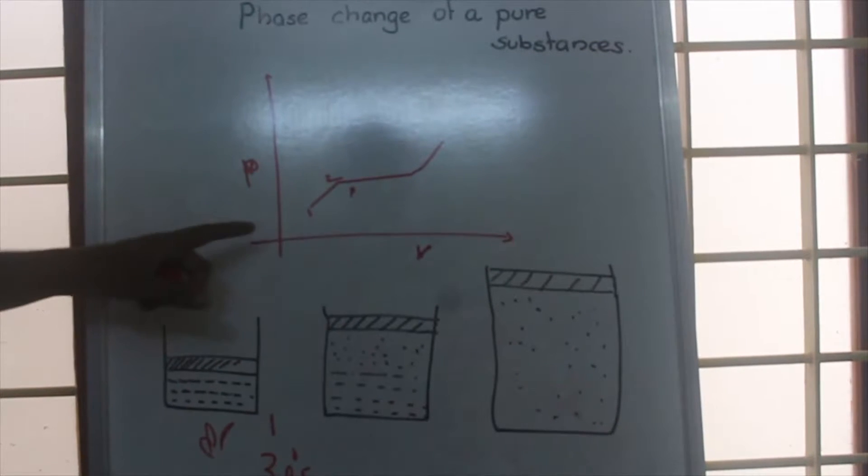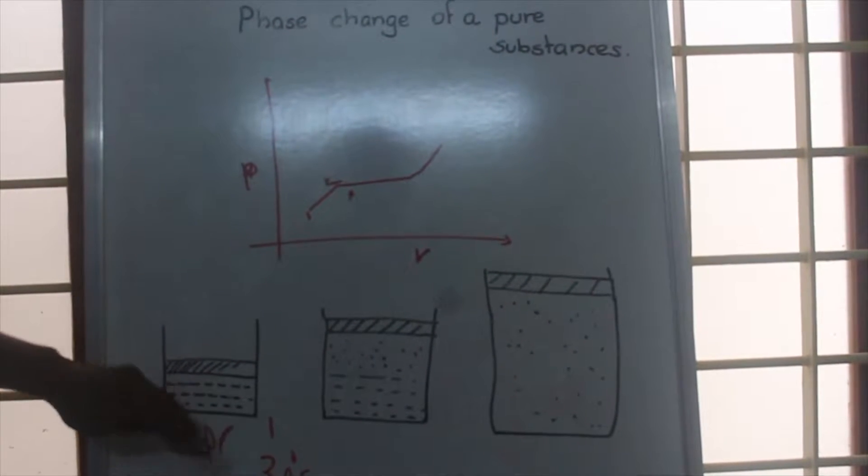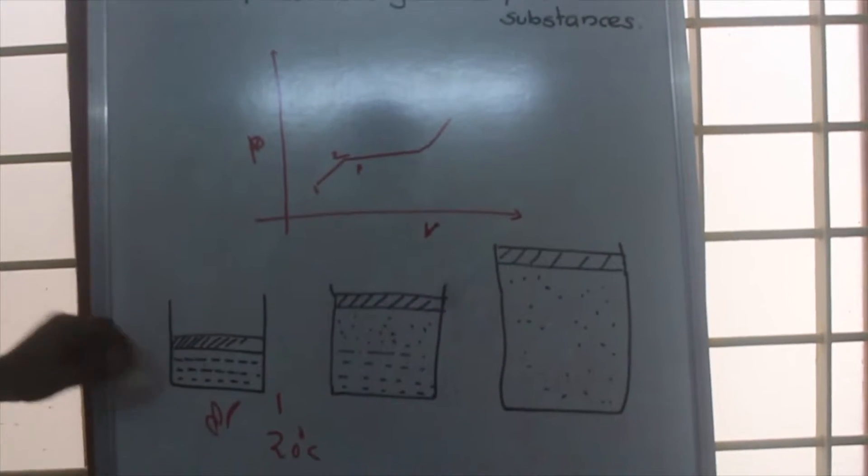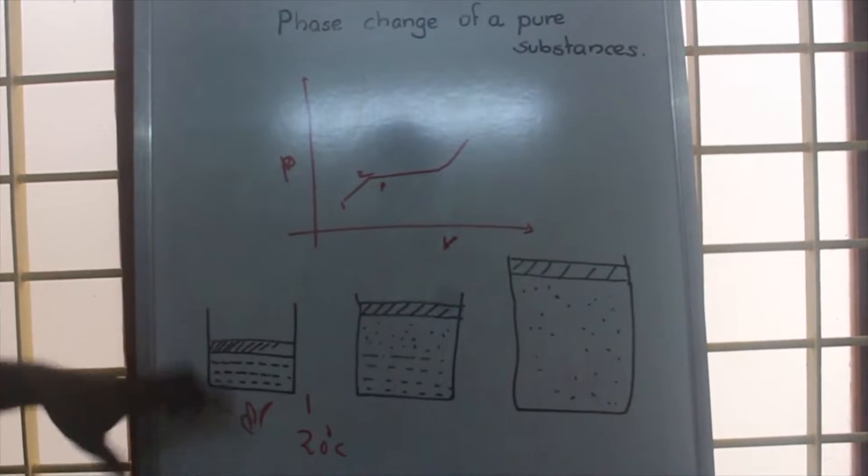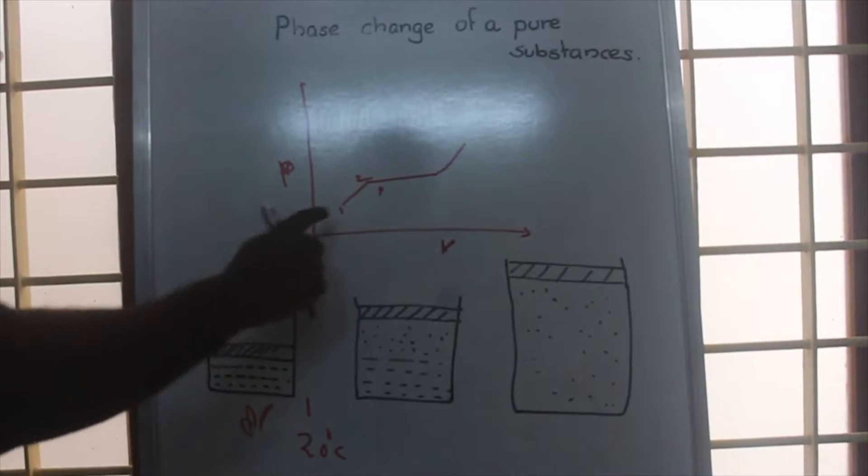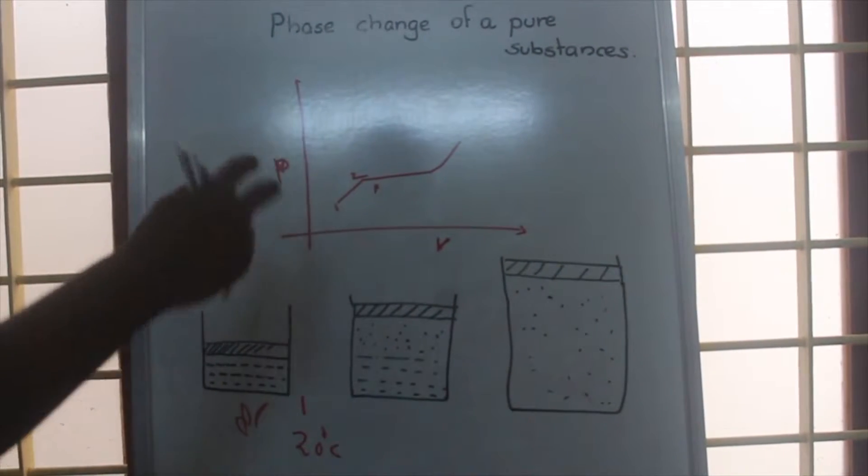During one to two, the temperature and the pressure of water will increase, and since temperature increases, obviously volume will also increase. So during one to two, both pressure and volume increase.